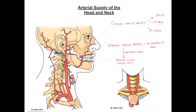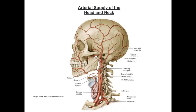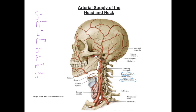Considering the external carotid artery and its eight branches, we'll relate to a different image of the head and neck arterial supply looking from the left aspect. We can see the carotid bifurcation and the external carotid artery continuing and giving rise to its many branches. Its eight branches can be helpfully remembered by a mnemonic — one appropriate here is: 'Some Anatomists Like Freaking Out Poor Medical Students.'